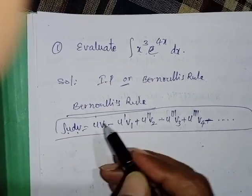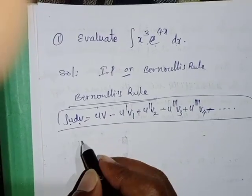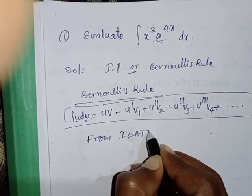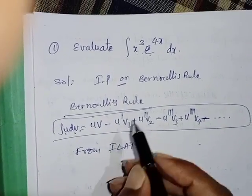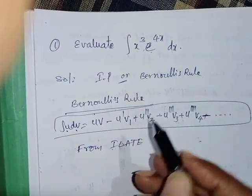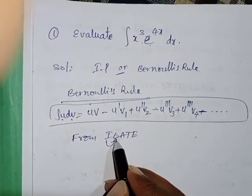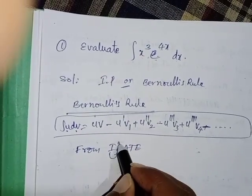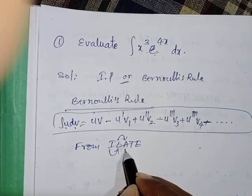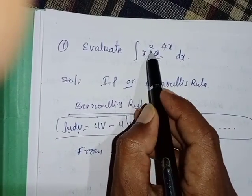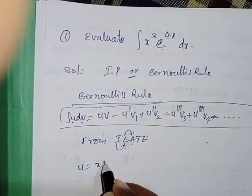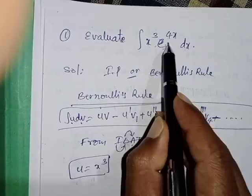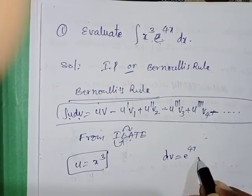Now, what is u and what is dv for the given equation? We find this using the ILATE rule. I means inverse trigonometry function — there is no inverse trig function here. L means logarithmic function — there is no logarithmic function. Moving to A: A means algebraic function. Yes, here x³ is the algebraic function. So u = x³.